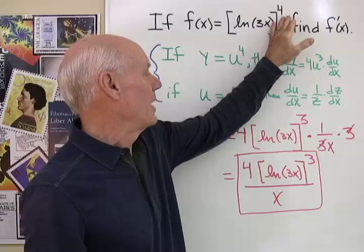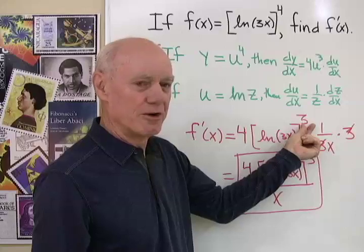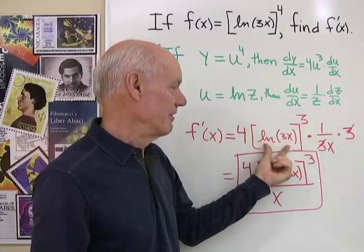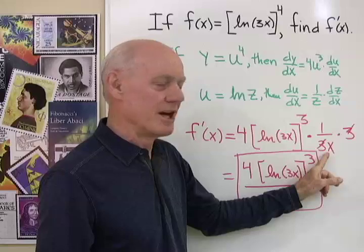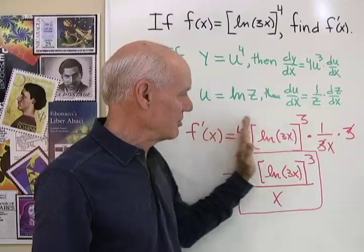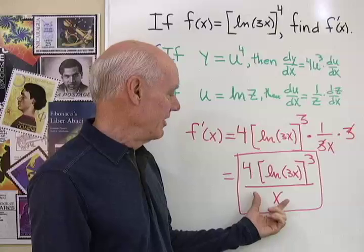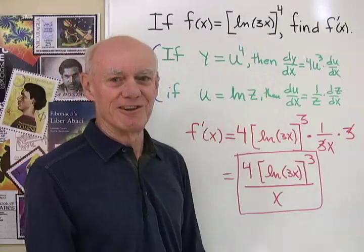So it's u to the fourth power and that derivative is going to be 4 times u to the third power times the derivative of u and that's going to be 1 over 3x times the derivative of 3x, which is just 3. So there's my chain rule. I've just chained those derivatives together like that and this is the derivative of this original function here.